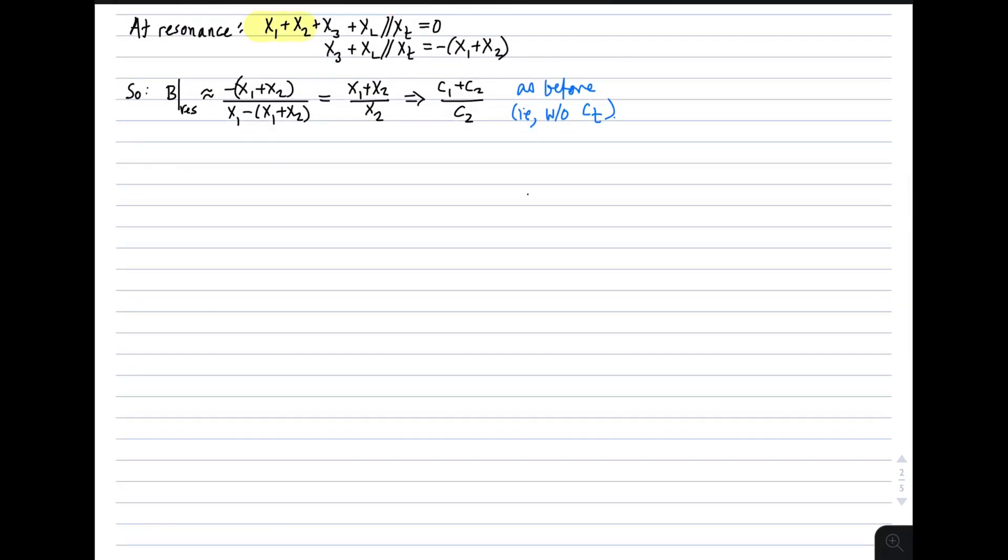At resonance, we have that X1, X2, X3, and XL in parallel with X sub T must be zero. That's simply saying that all the reactances add up to zero at resonance. So we have X3 plus the parallel combination of X sub L and X sub T is minus X sub 1 plus X sub 2. We can use that to replace X sub 3 plus X sub L in parallel with X sub T in the original expression. We get this simplified expression which is now just in terms of X1s and X2s. As before, we get the exact same expression for the voltage gain of the tank, C1 plus C2 over C2. So nothing has changed by adding this tuning capacitance.